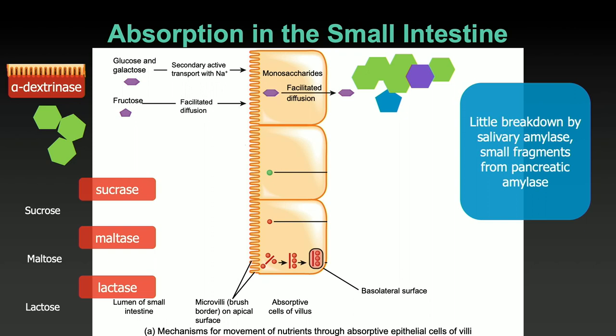Notice facilitated diffusion — fructose moves through a pore or channel in the membrane with the concentration gradient, passively. Glucose and galactose move with the sodium concentration gradient, so these are secondary active transport.